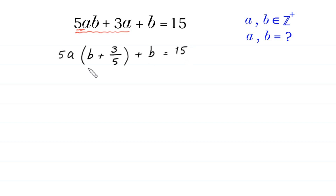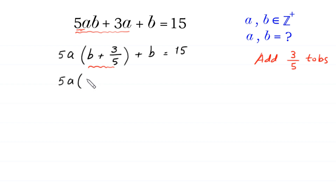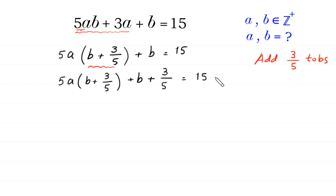Now, because here we have b plus 3/5, we add 3/5 to both sides. So we get: 5a times (b plus 3/5), plus b plus 3/5, is equal to 15 plus 3/5.